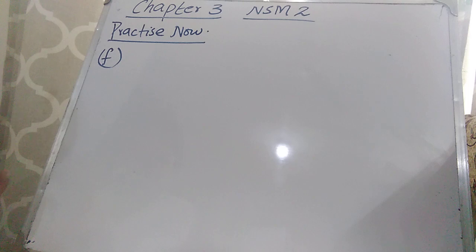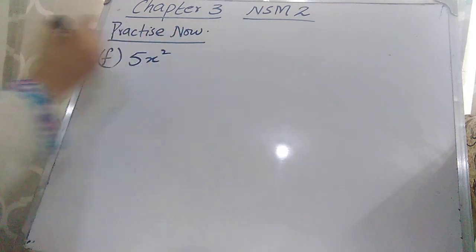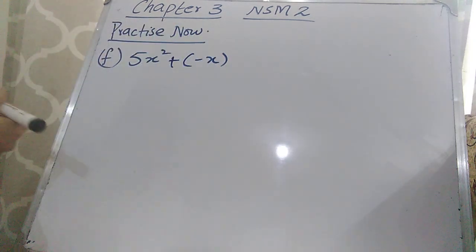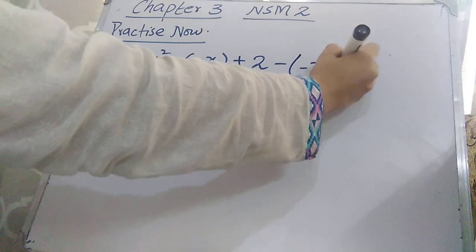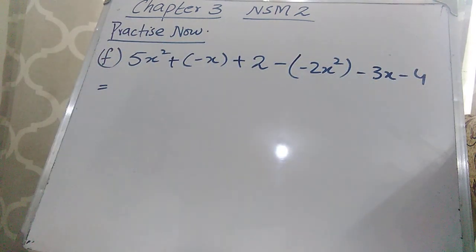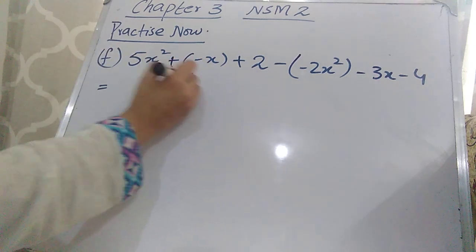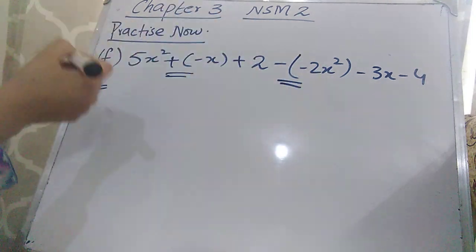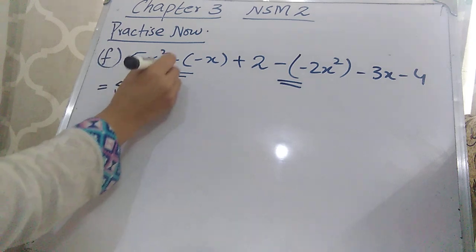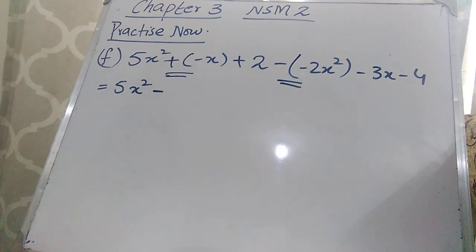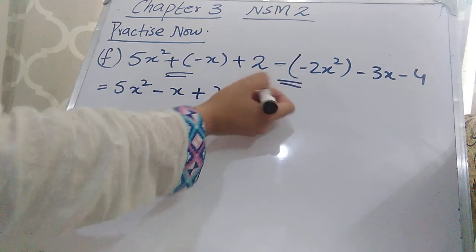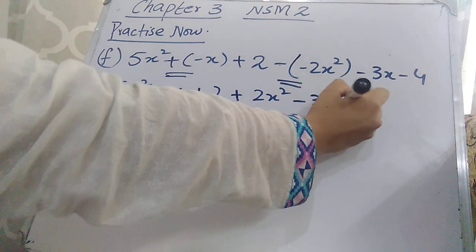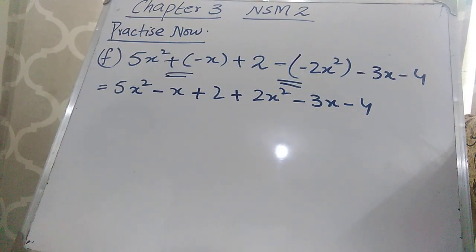For part (f): 5x² + (−(−2x² − 3x − 4)). First, wherever two signs appear together multiply them. Plus × minus = minus, and minus × minus = plus. After multiplying, this becomes 5x² − (−2x²) which simplifies to 5x² + 2x² − 3x − 4.